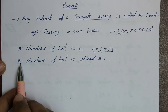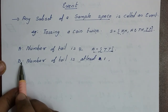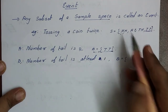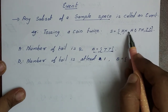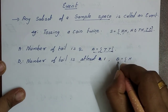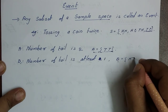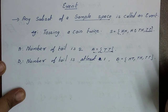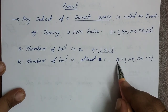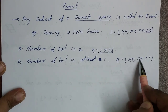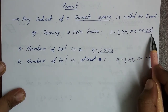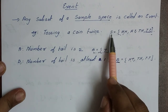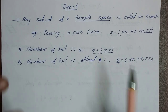Here we are going to take another example. This is event B: number of tails is at least 1. At least one tail — if you have at least one tail, what will be in event B? It will be {HT, TH, TT}. This is at least one tail. So for event B, we have HT, TH, TT — this is the sample space. B is an event in the sample space. So B is an event.